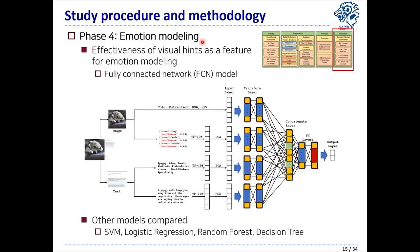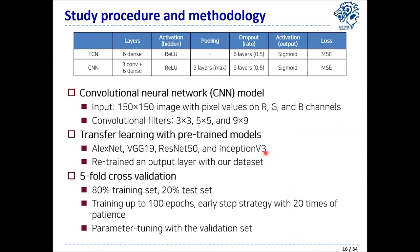In phase 4, we conducted emotion modeling. The objective was to test the effectiveness of visual hints as a feature for emotion detection. This figure illustrates the architecture of a fully connected network (FCN) model — more details are in the paper. For comparison, we also developed models using SVM, logistic regression, random forest, and decision tree. For more detailed comparison, we developed deep learning models including a CNN model, and also developed models through transfer learning using AlexNet, VGG-19, and others as pre-trained models.